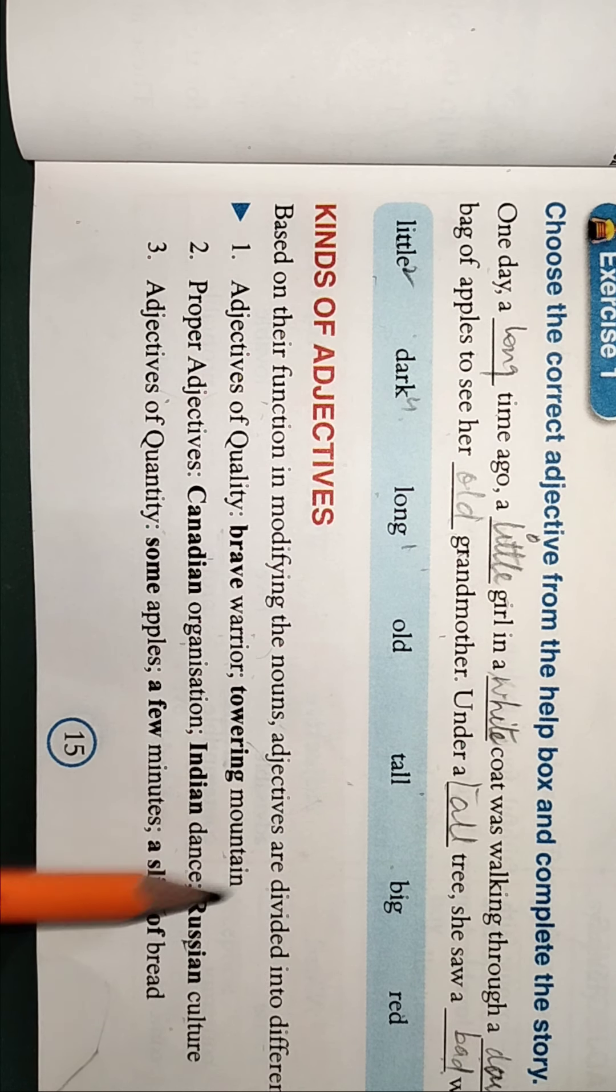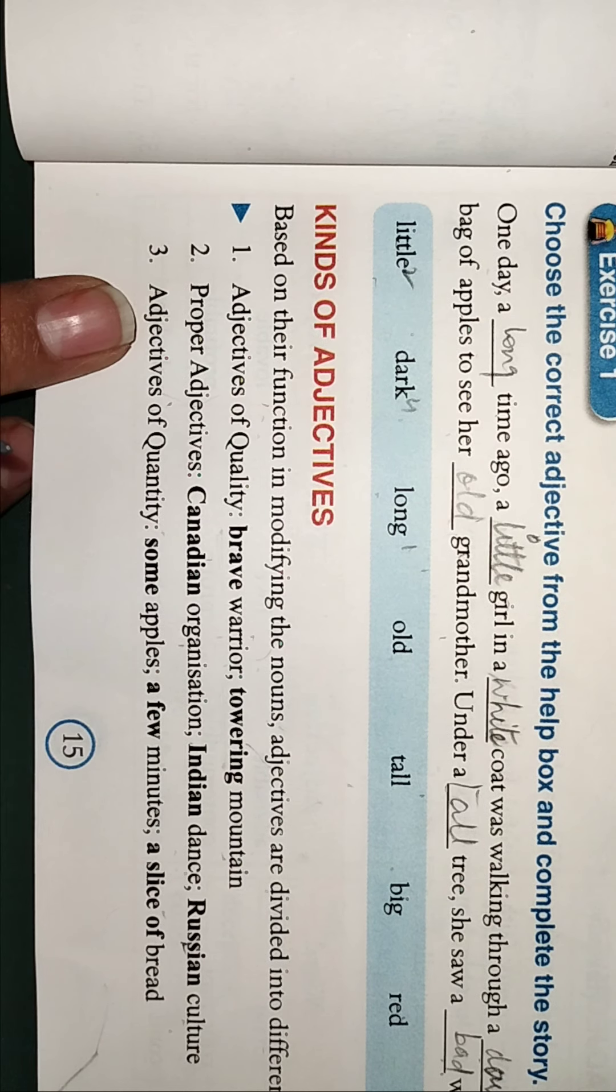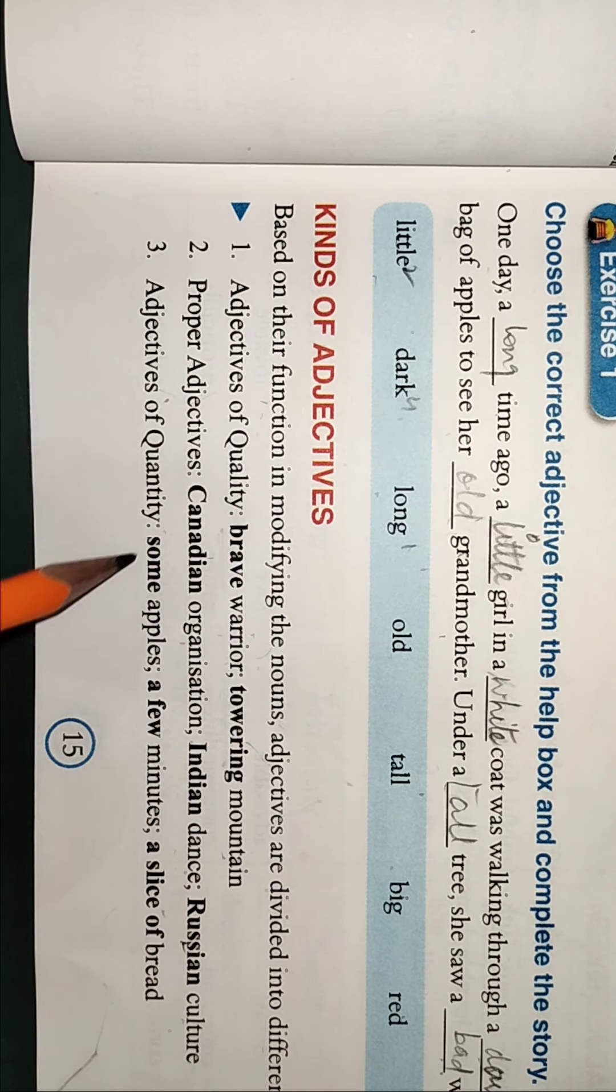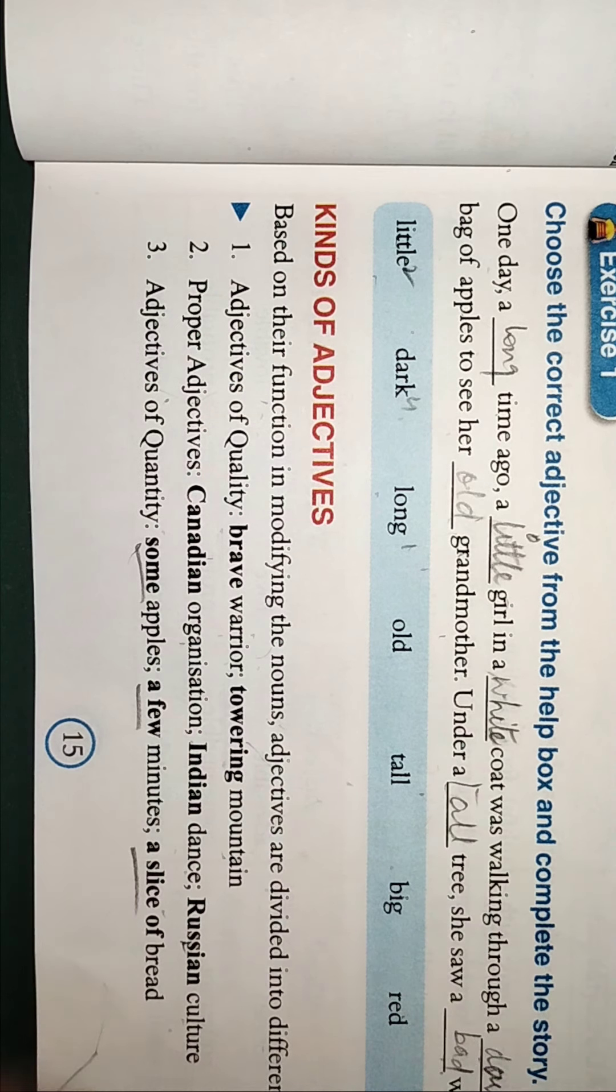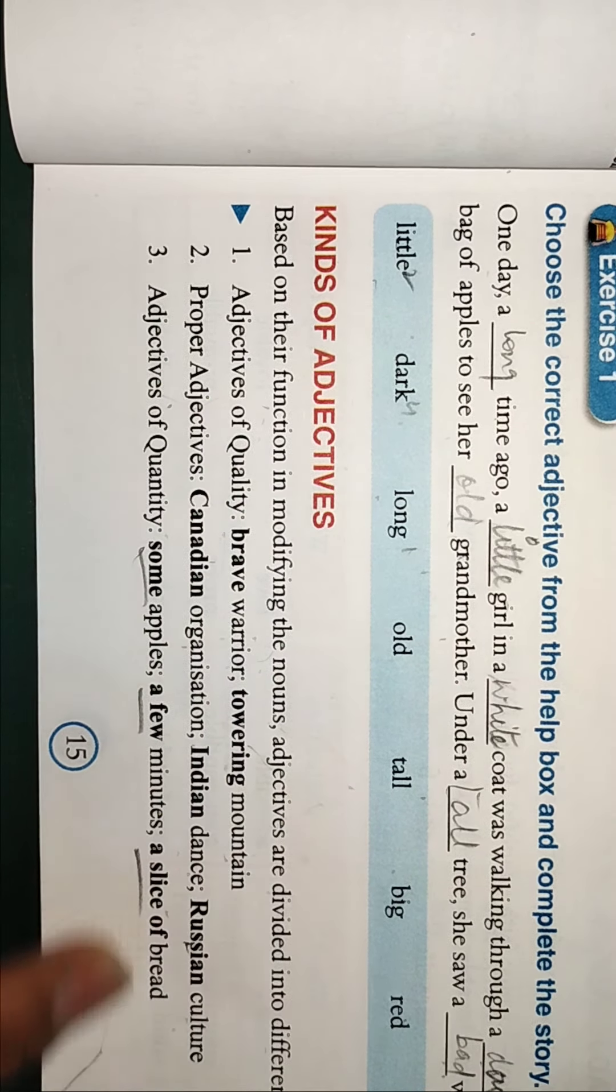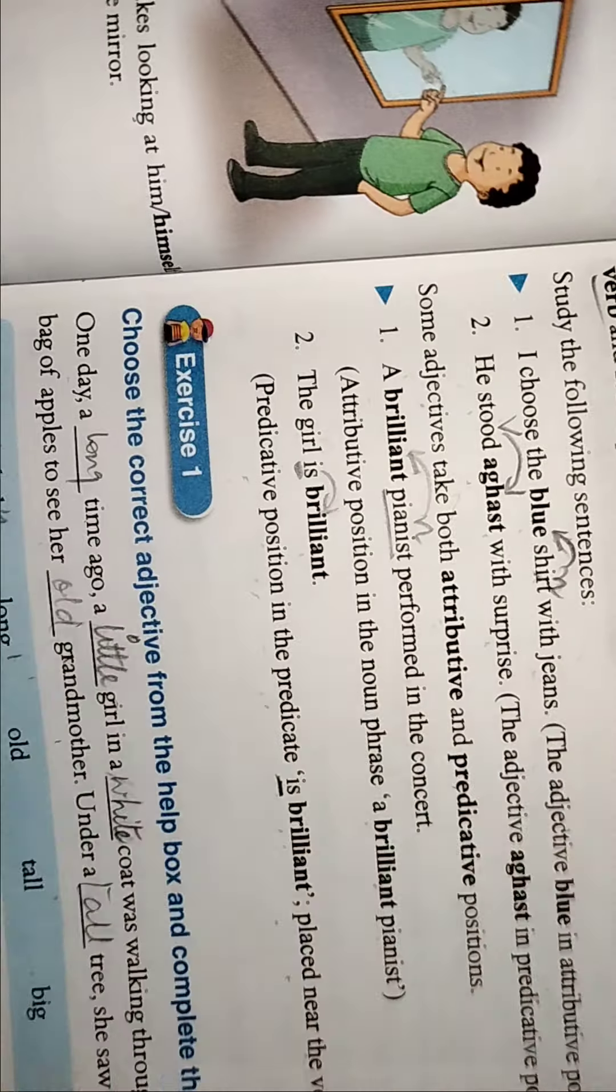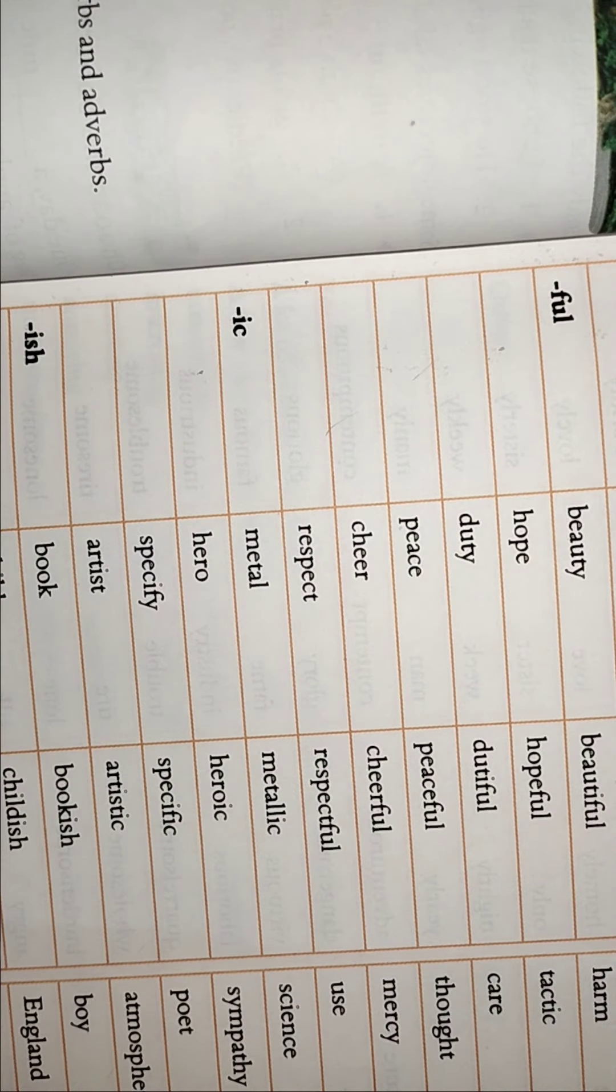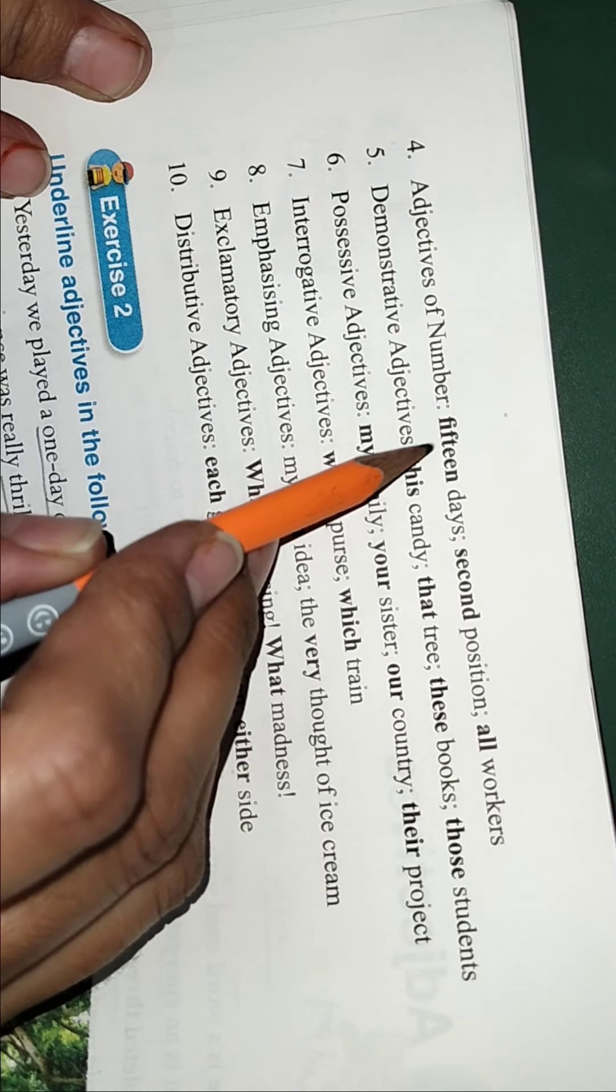Culture - Russian culture, Indian culture, dance - Kathak, Indian dance. So it's a proper adjective. Now comes the quantity - some apples, few minutes, slice of bread. So all these tell you about the quantity - some, few, slice.